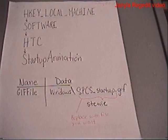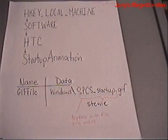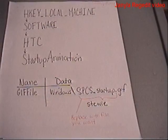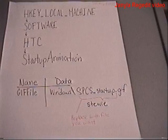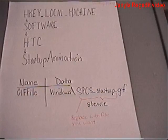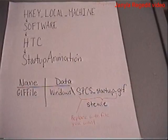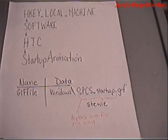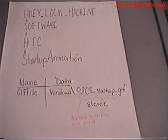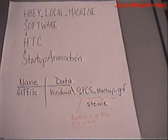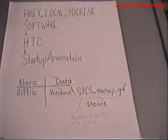Using a registry editor to change the sound for phone-on and change the picture for starting up the phone. You can use a registry editor of your choice. I use PHM RegEdit, which I found on freewarepocketpc.net.